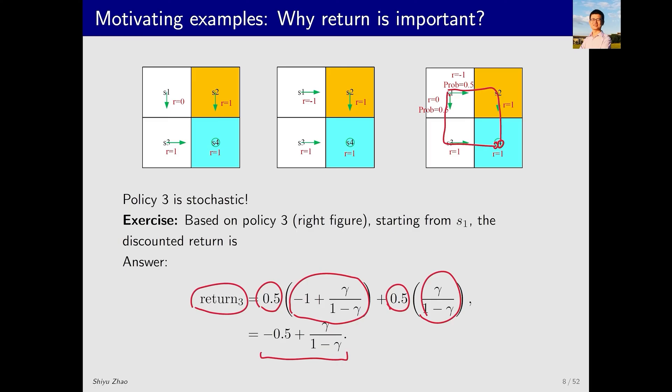Strictly speaking, this return is no longer based on the definition of return. Because return is defined for a single trajectory, and now we have two trajectories. What we are actually doing is to calculate an average. Calculating an average can be understood as calculating an expectation. Strictly speaking, this third return is the state value, which we are going to introduce soon. However, we do not need to care about it now. We can simply consider it as an average return starting from state S1.